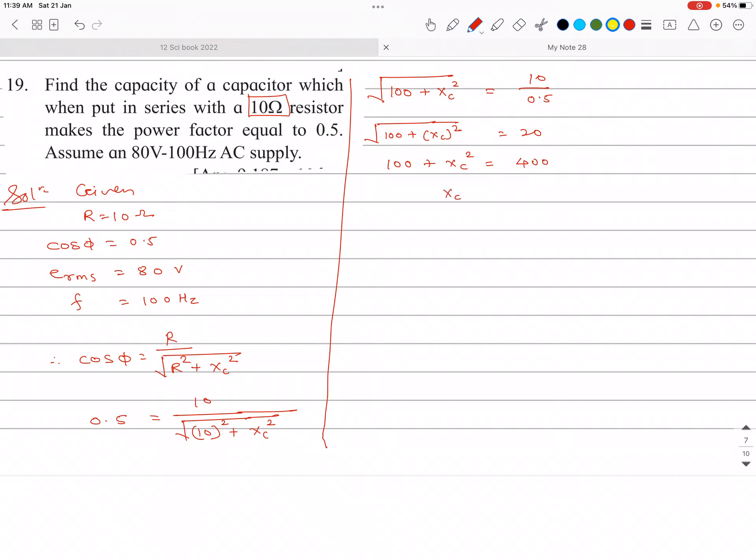So here we get XC square is 400 minus 100 and it is coming 300. So under root 300 is XC. So XC is root 300.